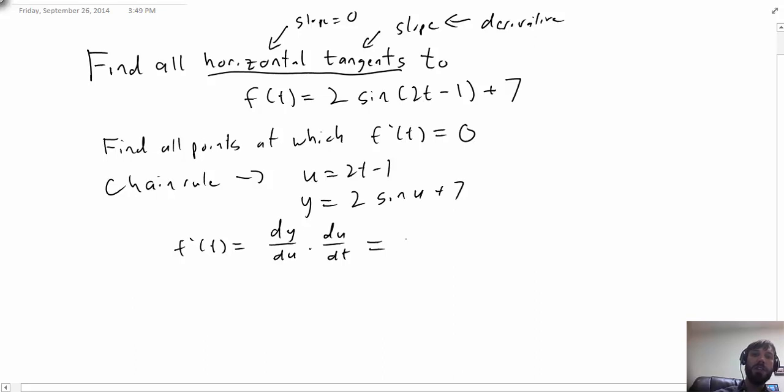Now dy/du is just 2cos(u) and then du/dt just contributes an extra 2. So we want to determine the solutions to this equation equal to zero. Now this equation is going to be zero if and only if cosine is zero.